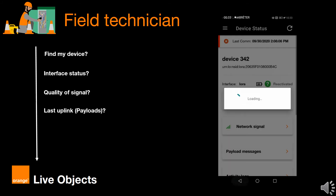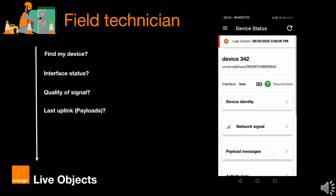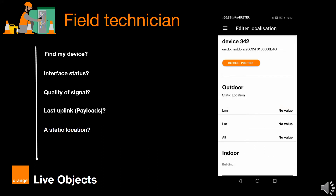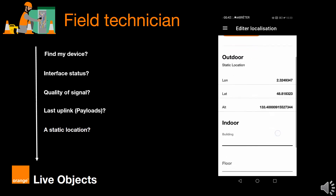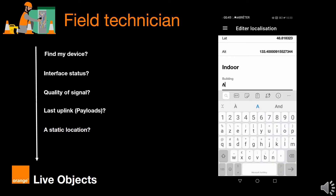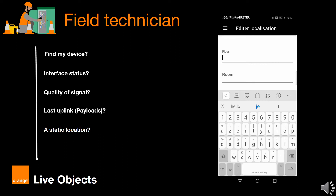Then I can use LiveObject Sensor to assign a static location for my device installation, using my mobile GPS and of course modifying building, floor, and room information.